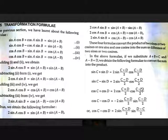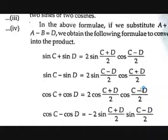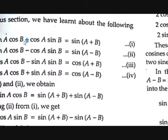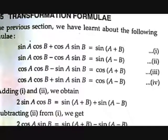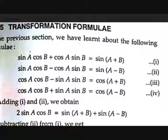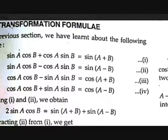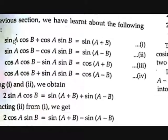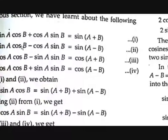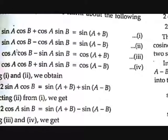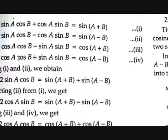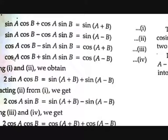Let's see what these are and how we can prove them. These formulae have no formal proofs — this is just a logical way we get them by adding and subtracting. We learned these formulae before in a previous video: sin A cos B + cos A sin B = sin(A+B), sin A cos B − cos A sin B = sin(A−B), cos A cos B − sin A sin B = cos(A+B), and cos A cos B + sin A sin B = cos(A−B).